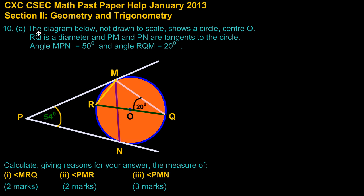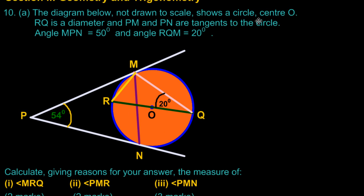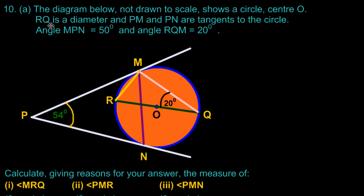The note states: the diagram below, not drawn to scale, shows a circle centre O. RQ is a diameter and PM and PN are tangents to the circle. Angle MPN is equal to 50 degrees and angle RQM is equal to 20 degrees. Here they're asking us to calculate, giving reasons for your answer, the measure of in part one, the angle MRQ. That's an easy two marks.